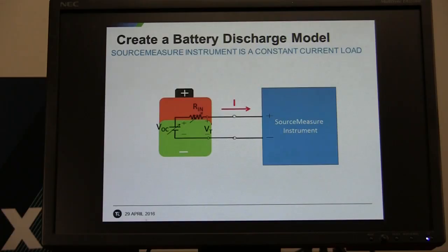So the essence of this demo is that we're going to use the source meter, connect it up to a battery, and discharge the battery to create a battery discharge model. So the source meter is used as a constant current load and discharges the battery from full to completely empty.